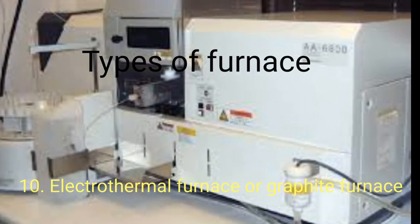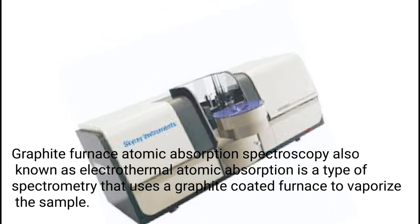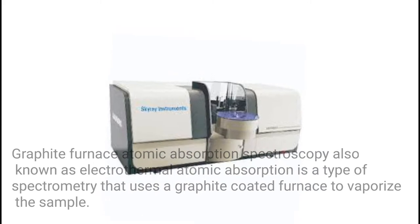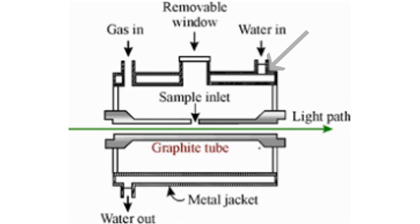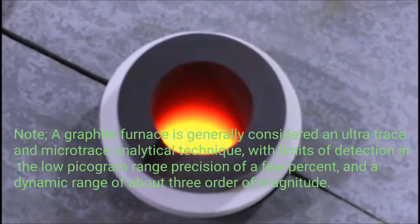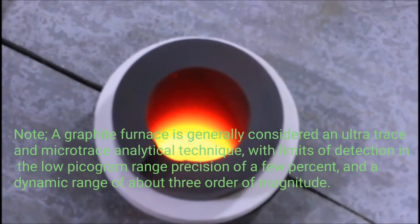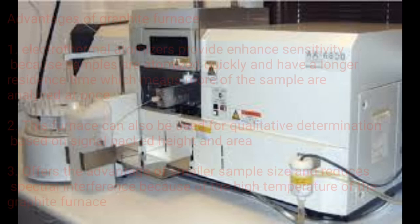Type 10: Electrothermal Furnace or Graphite Furnace. Graphite furnace atomic absorption spectroscopy, also known as electrothermal atomic absorption, is a type of spectrometry that uses a graphite-coated furnace to vaporize the sample. A graphite furnace is made up of a graphite tube at both ends with a hole in the center for sample introduction. The tube is encased with graphite electrical contacts at both ends that serve to heat the sample. A supply of water is used to keep the graphite furnace cool, and an external stream of inert gas flows through the tube carrying away vapors from the sample matrix.